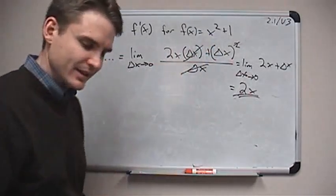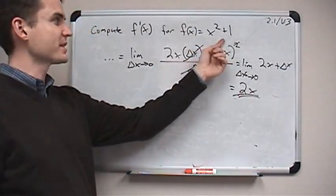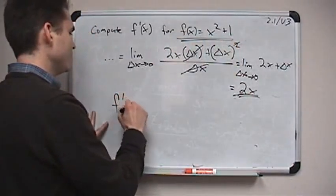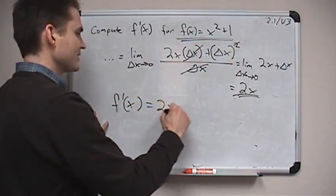And again, that's the thing we'd want to compute if we're interested in finding the slope of this function at several different points. So we started with this function. Now we know f prime of x is 2x.